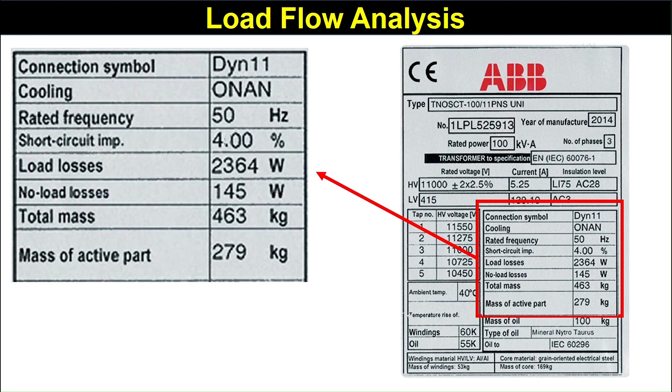No load losses, that is the no load loss is 145 watt and load losses, that is total losses, 2364 watt and short circuit impedance, that is the percentage impedance is 4%. These things are mentioned in the nameplate of the transformer.